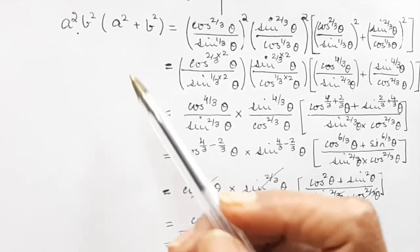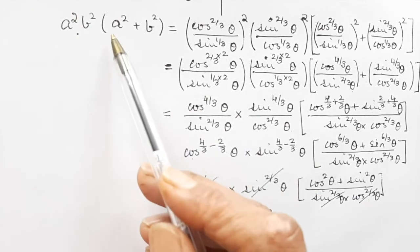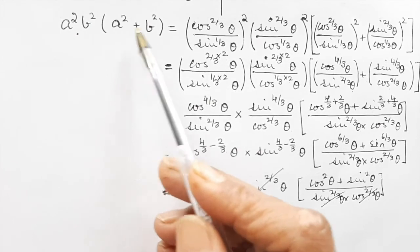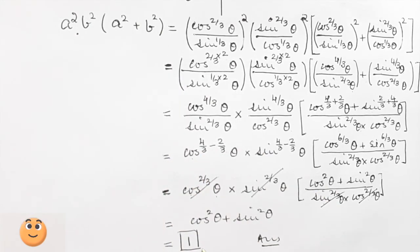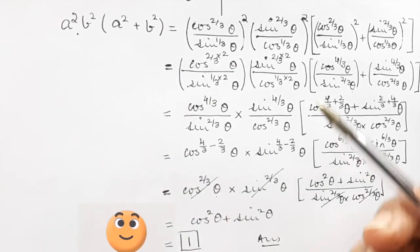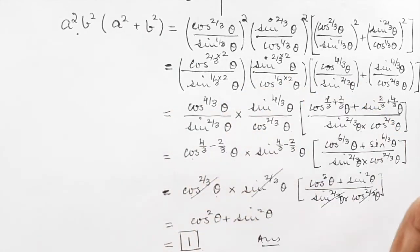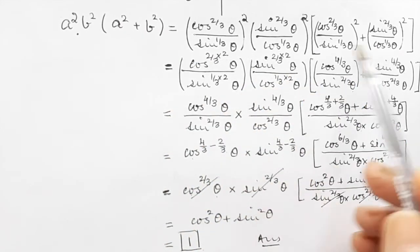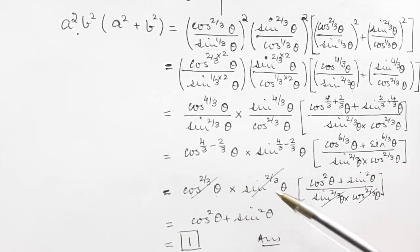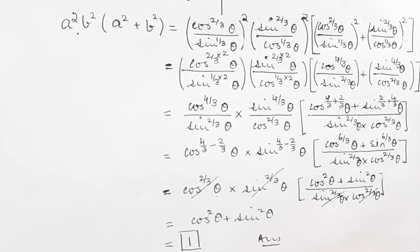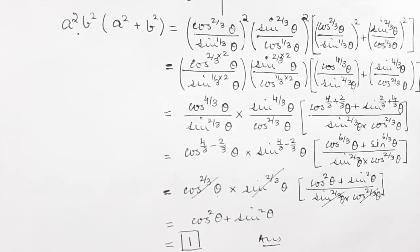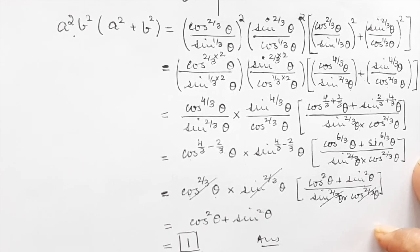So if the question asks you to prove that a²b²(a²+b²) = 1, all you have to do is find your a and b values as we did earlier, substitute, and simplify. I hope you understood this question. All the best for your exams and thank you for watching.